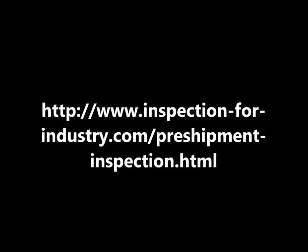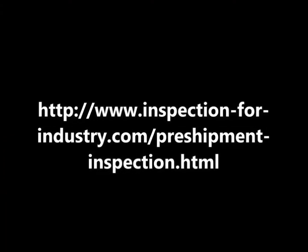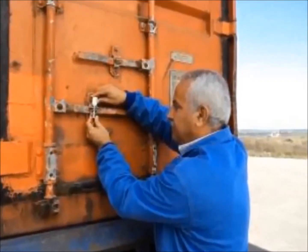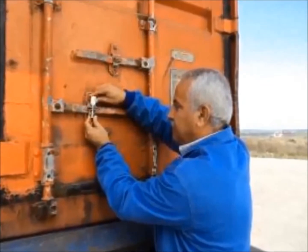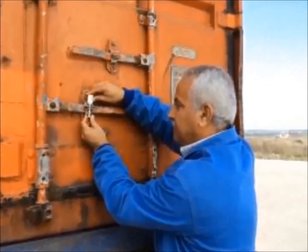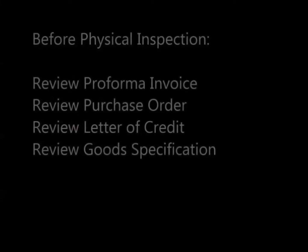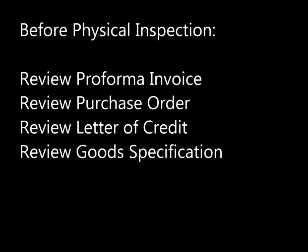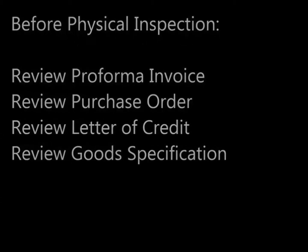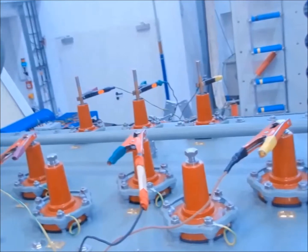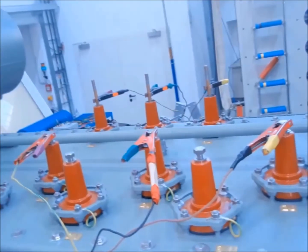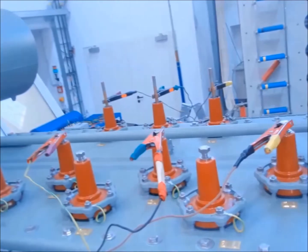Based on the agreement between the buyer and seller, the goods might be inspected by the buyer's own inspector or an independent third-party inspector. The proforma invoice, purchase order, letter of credit, goods specification, and drawing must be reviewed by the inspector before the physical inspection of goods can occur. The third-party inspector must provide an inspection visit report to the purchaser and issue the inspection release note if the inspection result was satisfactory.